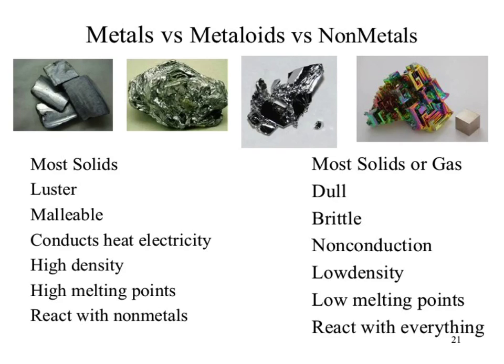Malleability versus brittle — malleability has to do with what happens if you hit it. If you hit a metal, it bends and shapes around the impact, whereas a non-metal, when you hit it, tends to shatter. You've hit charcoal briquettes — carbon is a non-metal because it's on the right of that staircase. When you hit those, they shatter. But if we hit gold, we would see it just kind of deform and misshape.